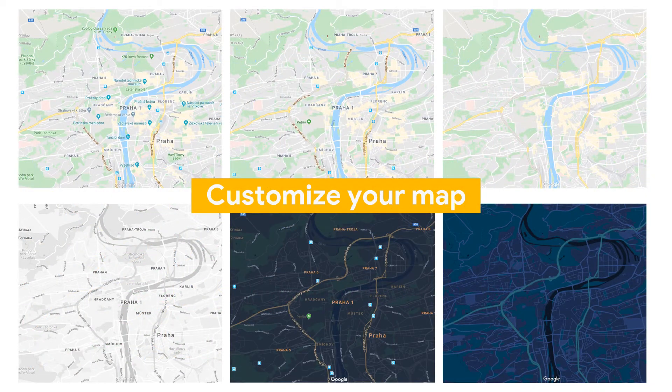First, you can customize your map. Express your creativity and create maps with unique designs that reflect your visual identity. Get off the line and present yourself with an original map — it is super easy. You can set colors of layers and also set how many labels, landmarks, or roads are displayed. You can use styling to prevent business listings, points of interest, and other features from appearing on the map.